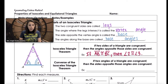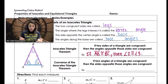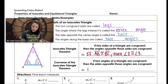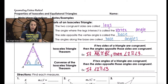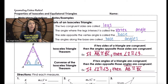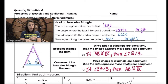The converse of that theorem is also true: if the angles are congruent, the opposite sides are as well. So if angle two is congruent to angle three, I can conclude that the sides opposite these angles are also congruent. This is a fancy way of saying isosceles triangles will always have two congruent sides and two congruent angles.